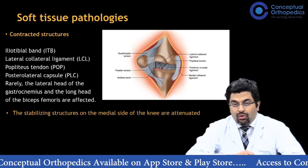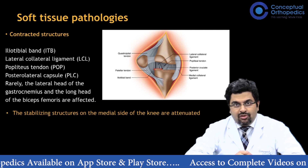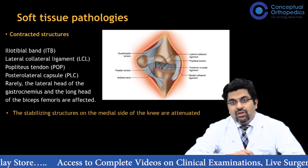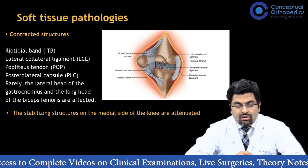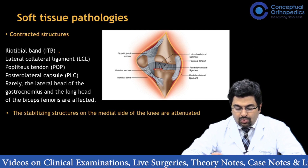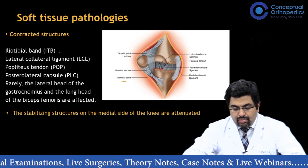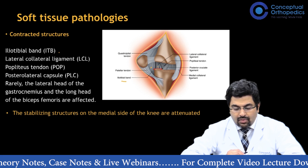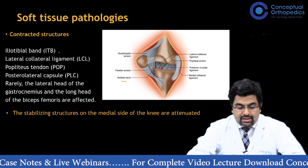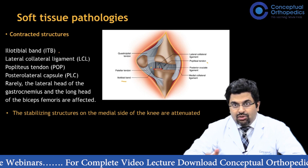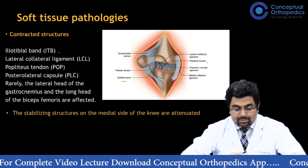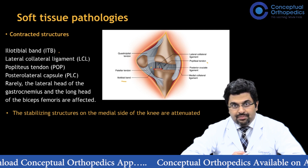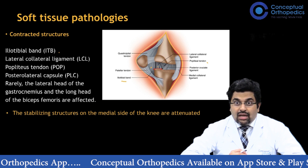Regarding soft tissue components of a valgus deformity, there will be contracted structures on the lateral side and elongated structures on the medial side. Among the contracted lateral structures, these include the iliotibial band, the tight lateral collateral ligament, a tight popliteus tendon — which lies adjacent to the lateral collateral ligament — a tight posterolateral capsule, and rarely the lateral head of gastrocnemius and the long head of biceps.